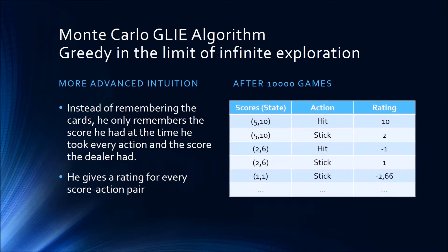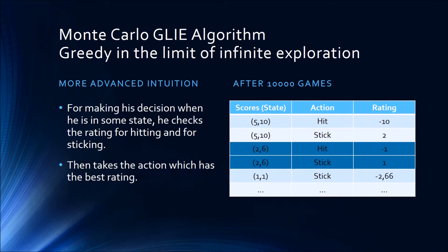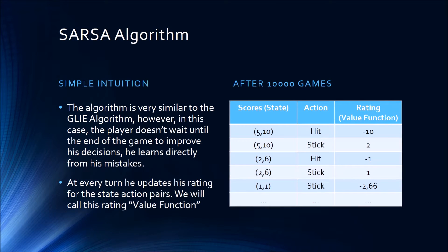For making his decision, he goes to the state he is in, sees the rating for hitting and the rating for sticking, and since the rating for sticking is higher, he sticks. The Sarsa algorithm is very similar to the Monte Carlo algorithm. However, in this case the player doesn't wait until the end of the game to improve his decisions — he learns directly from his mistakes. At every turn he updates his rating for the state-action pairs, and we call this rating the value function.